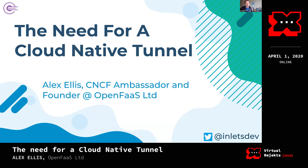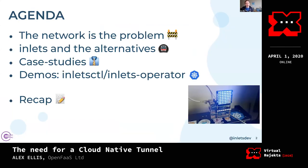The agenda is going to be pretty broad. We'll start off by looking at networking and why the network was a problem when I was a teenager — and why it's still a problem now. We'll then look at inlets, the cloud native tunnel, and the alternatives to tunnels and to inlets, and see how they weigh up. We'll then get into a few case studies showing how the community is using it.